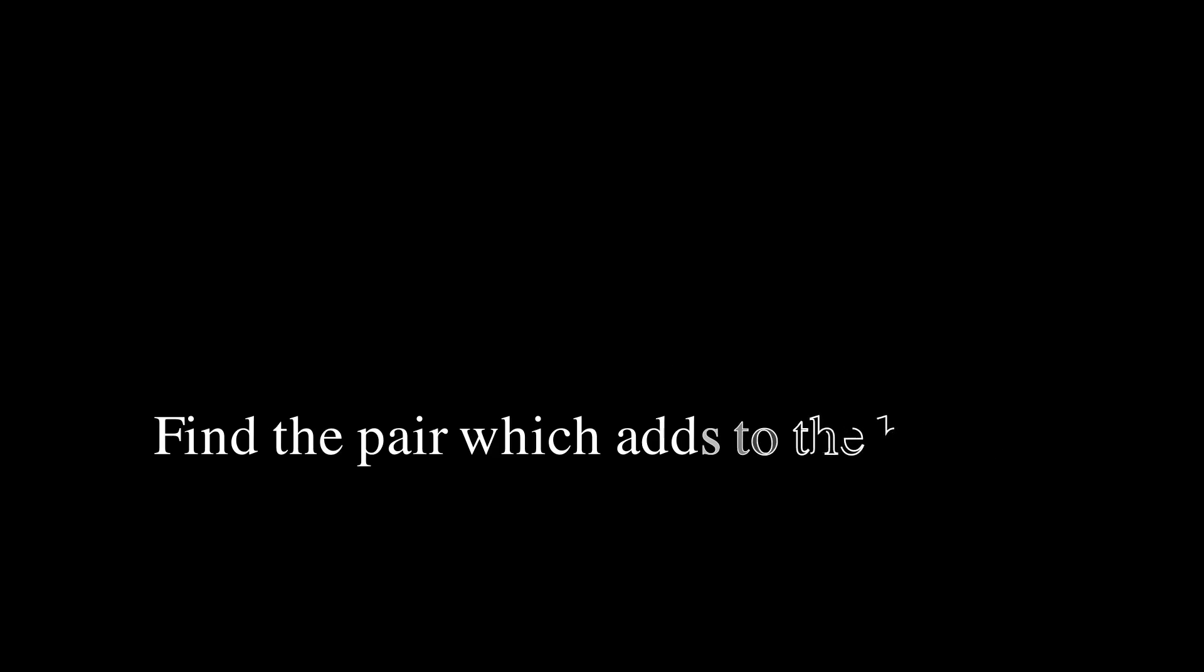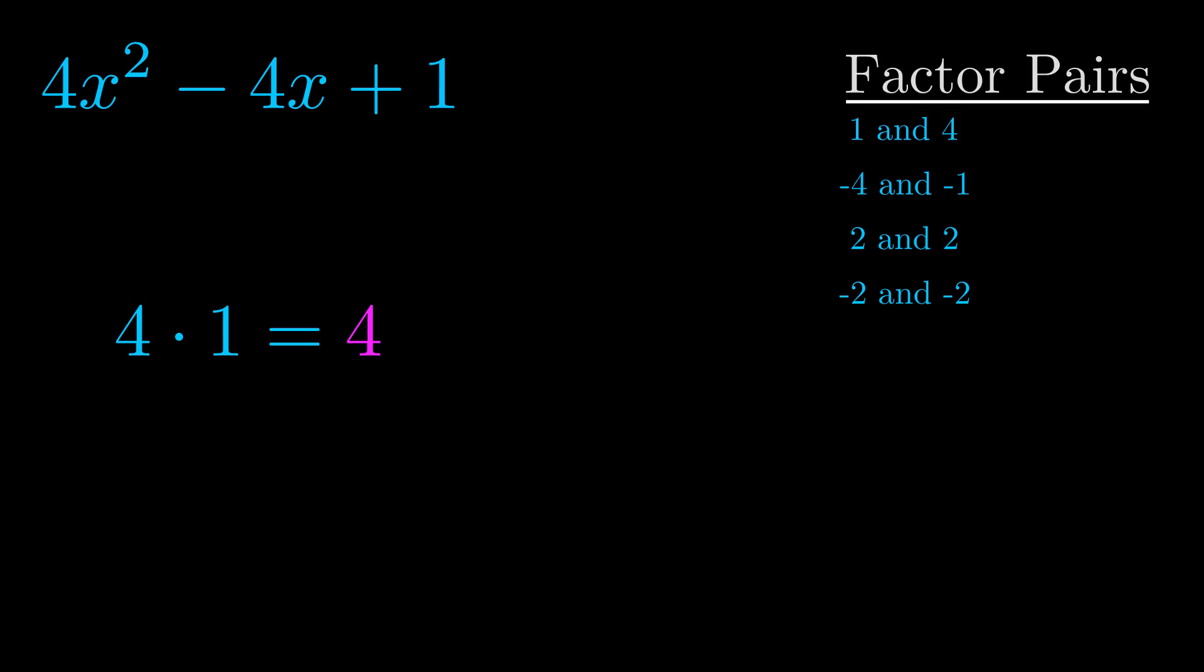The b value is the coefficient on the x term. That's the middle term, the one that we haven't done anything with yet. And really this is the only factor pair that we need.